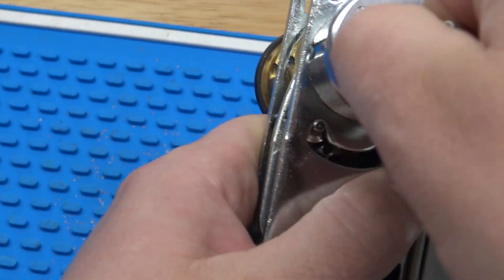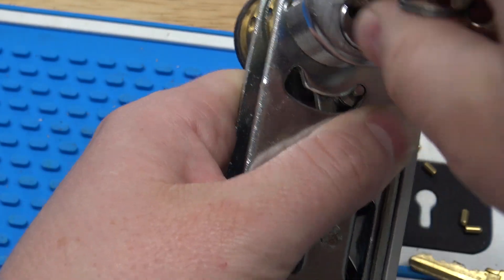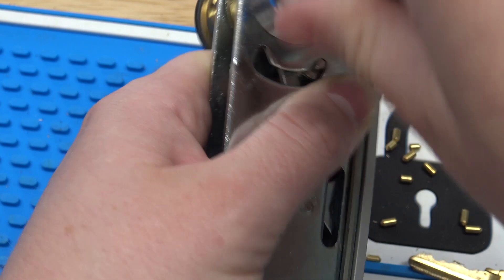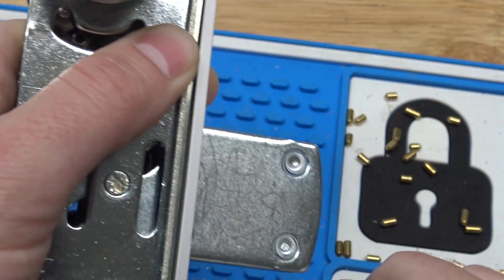And then when you unlock it, the opposite half is pushed down, which throws it the other way to unlock it. And that's what the bypass tool does.